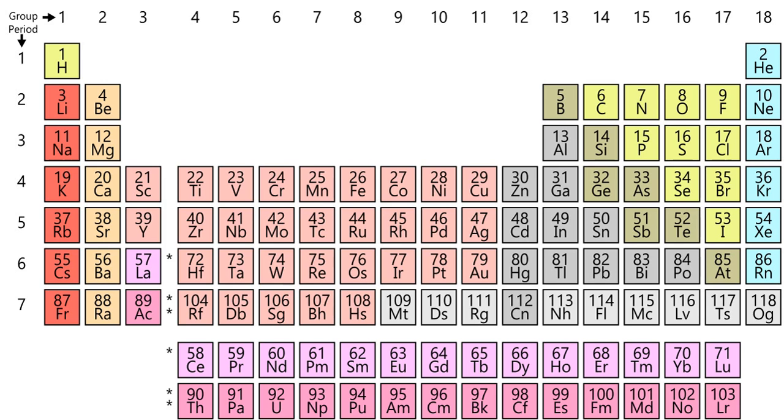The elements in a group have similar physical or chemical characteristics of the outermost electron shells of their atoms, i.e., the same core charge, as most chemical properties are dominated by the orbital location of the outermost electron.